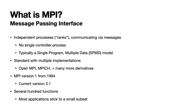MPI is a standard with multiple implementations. Open MPI and MPICH are the two most common ones, but there are many derivatives of these, often written by specific vendors targeting their hardware. It's also very old by computing standards — the original version dates from 1994. The current version has approximately several hundred functions, though most applications stick to a very small subset of these.